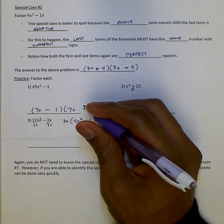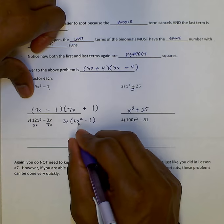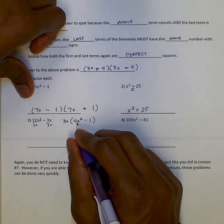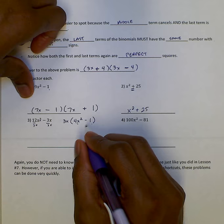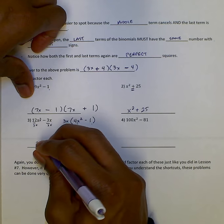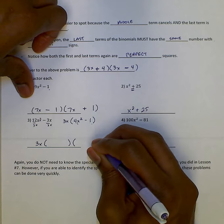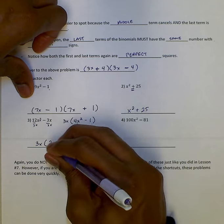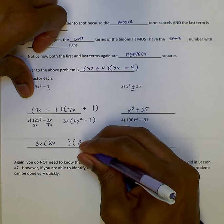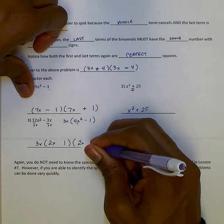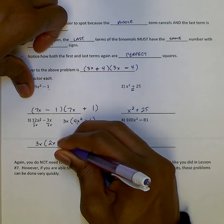And so now we're going to factor here. You see that this is a perfect square minus a perfect square. So 3x on the outside, and then the square root of 4x squared is 2x. Write that both places. The square root of 1 is 1, plus 1, minus 1.